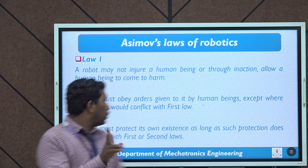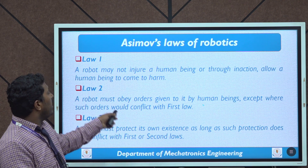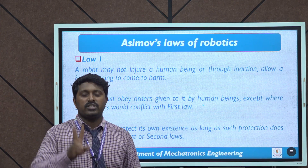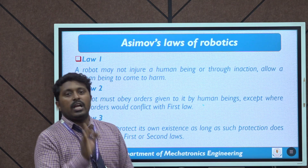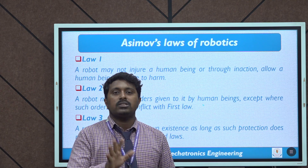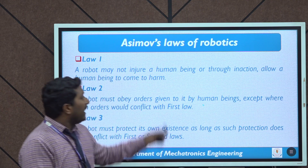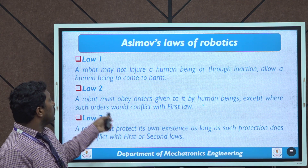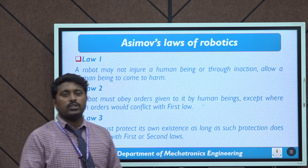Law number two: a robot must obey orders given to it by human beings, except where such orders would conflict with the first law.